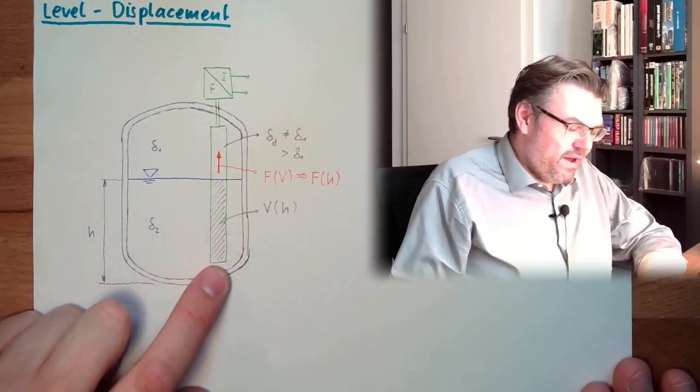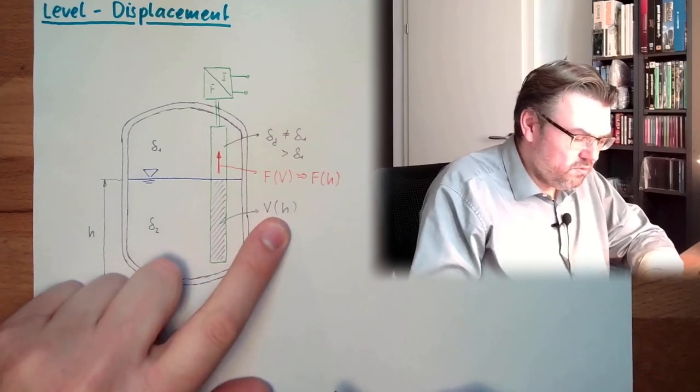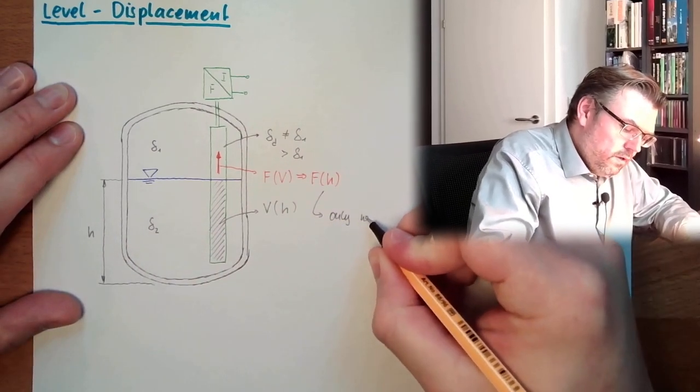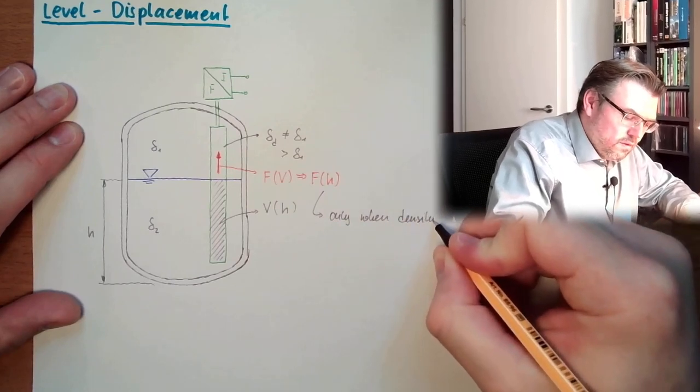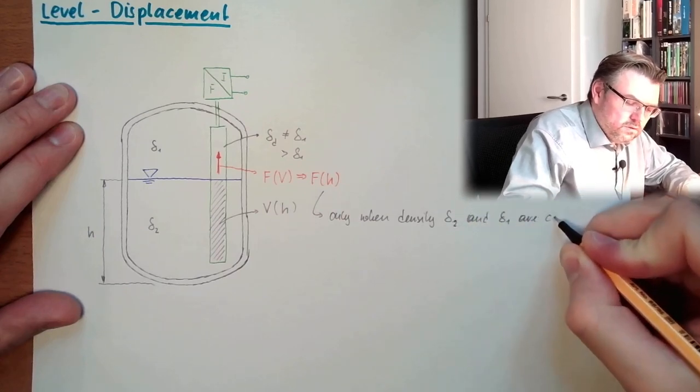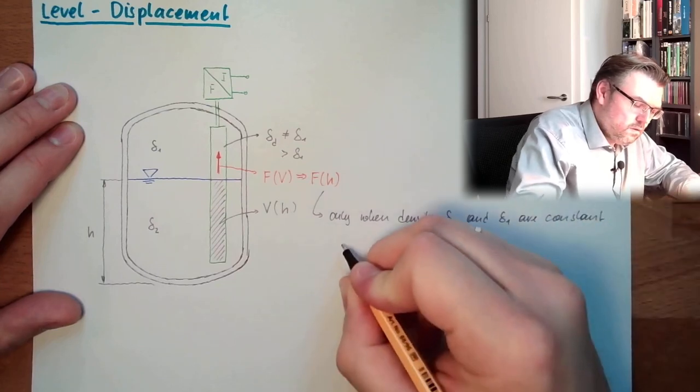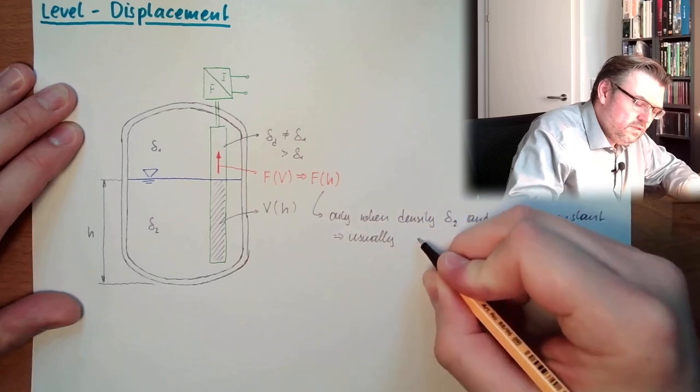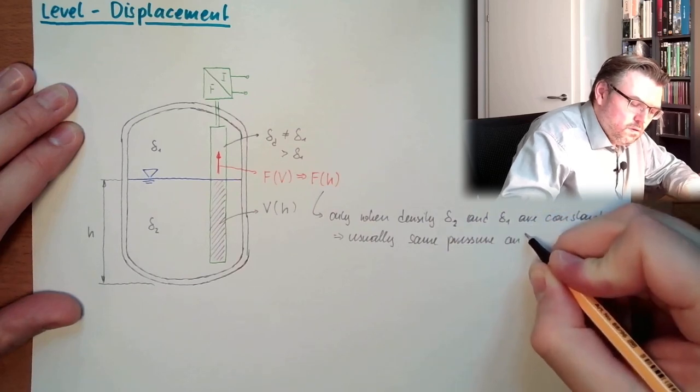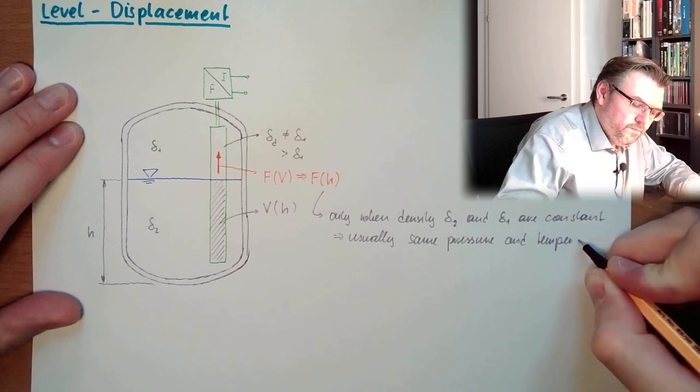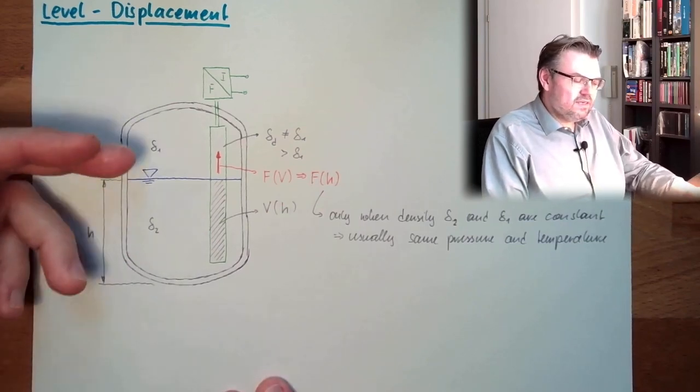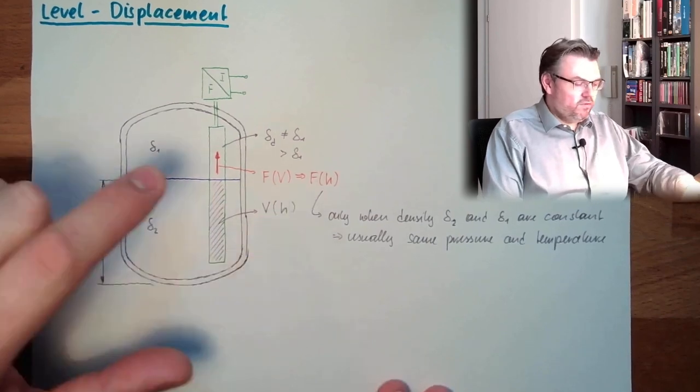So if we have here, this is always true. And this is only true when density rho1 and rho2 are constant. Usually, this means same pressure and temperature. So if we have the same pressure and temperature, then those densities are constant. And then, this is really a function of the filling, of the height.